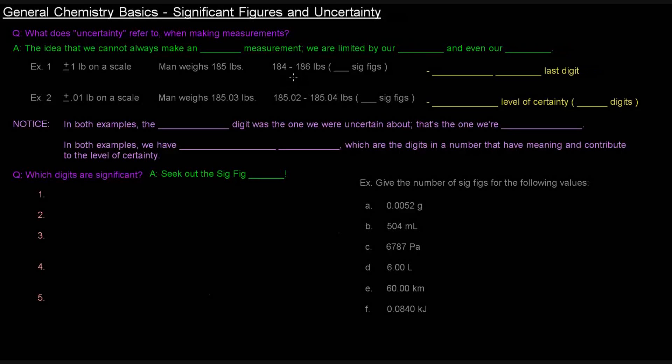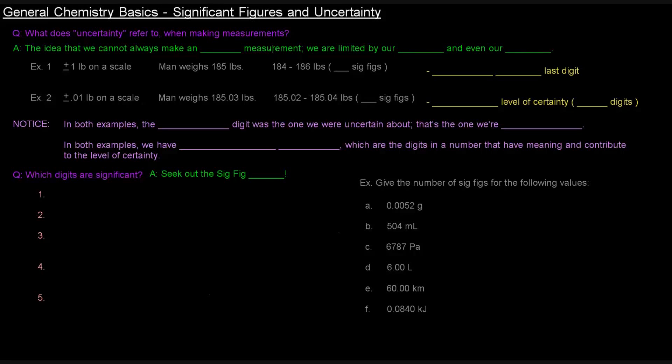This video is going to be on significant figures and uncertainty, at least an introduction to both. So what is uncertainty and what does it refer to when making measurements? Simply, it refers to the idea that we can't always make an exact measurement when we're measuring things.